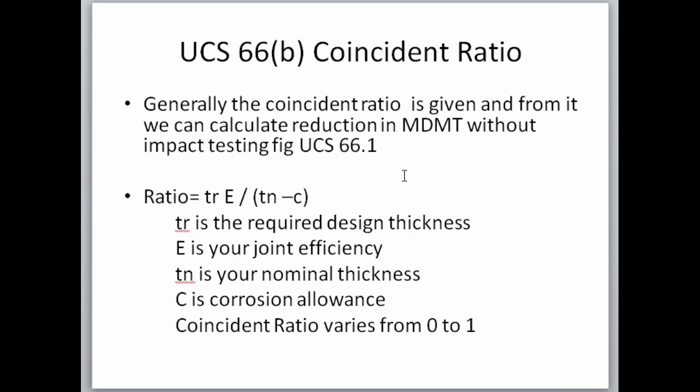The equation to find the coincidence ratio is: (TR × E) / (TN − C), where TR is the required design thickness, E is the joint efficiency, TN is the nominal thickness, and C is the corrosion allowance. The coincidence ratio generally varies between 0 and 1.